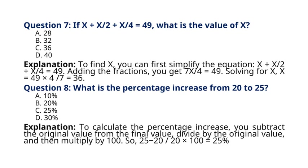Question 8. What is the percentage increase from 20 to 25? A. 10%, B. 20%, C. 25%, D. 30%. Explanation: To calculate the percentage increase, you subtract the original value from the final value, divide by the original value, and then multiply by 100. So, 25 minus 20 divided by 20 into 100 is equal to 25%. So the correct answer to question 8 is option C. 25%.